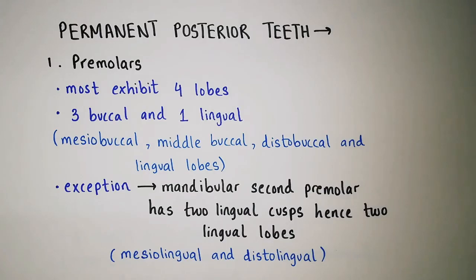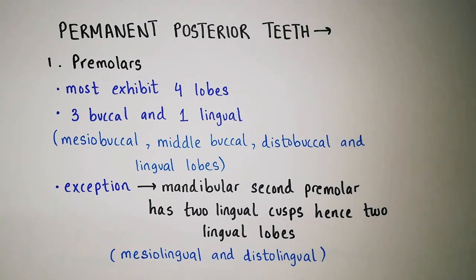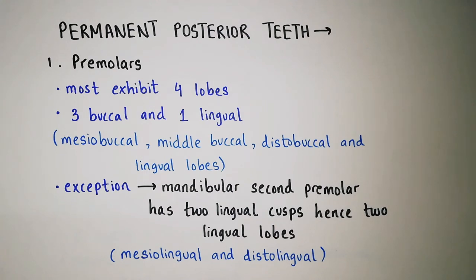Now let's talk about permanent posterior teeth. When we talk about premolars, except for the mandibular second premolar, all exhibit four lobes — three buccal and one lingual. These are the mesiobuccal, middle buccal, distobuccal, and lingual lobes. The mandibular second premolar has two lingual cusps, hence two lingual lobes, which are the mesiolingual and distolingual lobes.